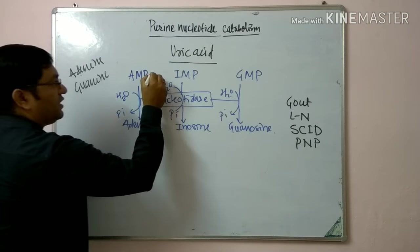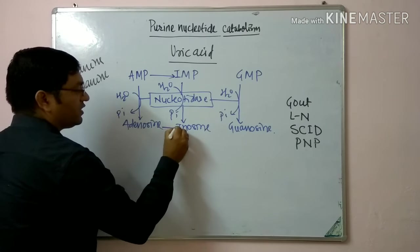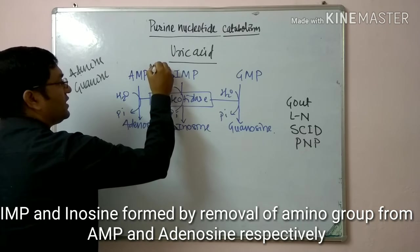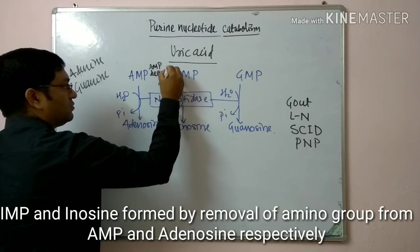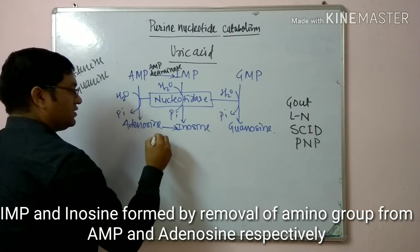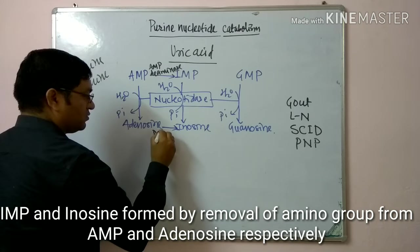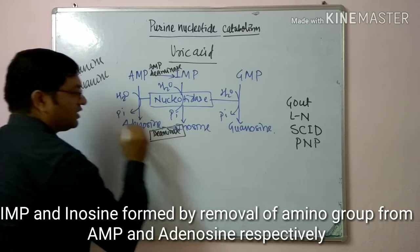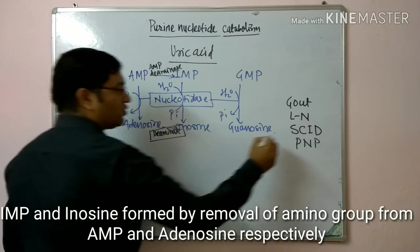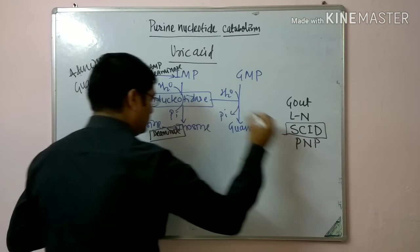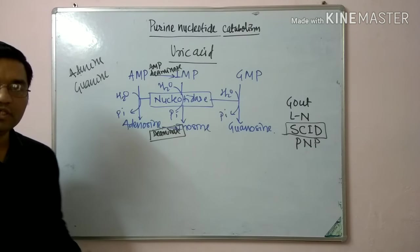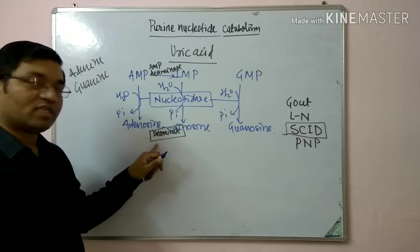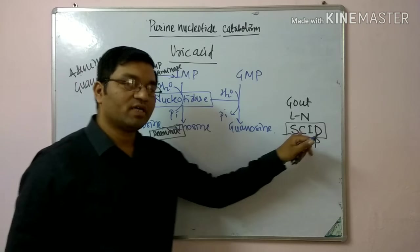When AMP is converted into IMP and adenosine is converted into inosine, this is done with the help of AMP deaminase and adenosine deaminase. This is important — deficiency of this enzyme leads to the disorder known as severe combined immunodeficiency, due to adenosine deaminase deficiency. Gene therapy was tried for the first time on this disease.